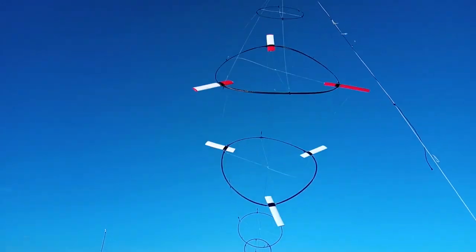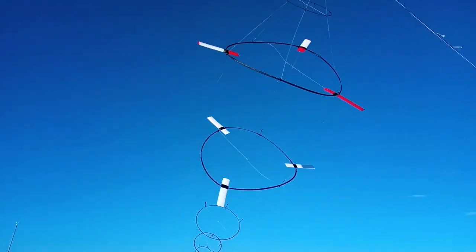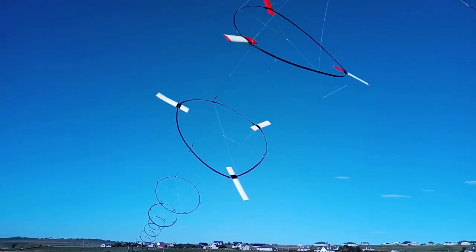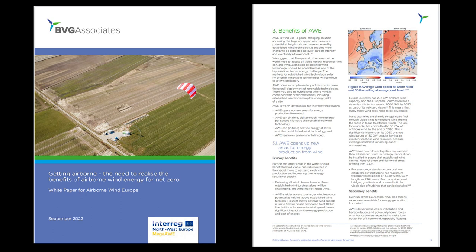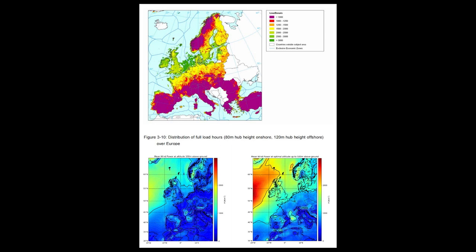So far we've only tested small systems but our models and test results show that kite turbines should be able to take advantage of the better wind resources at high altitudes. At only 500 meters above ground the wind over mainland Europe is as powerful as it is over the North Sea at 100 meters.